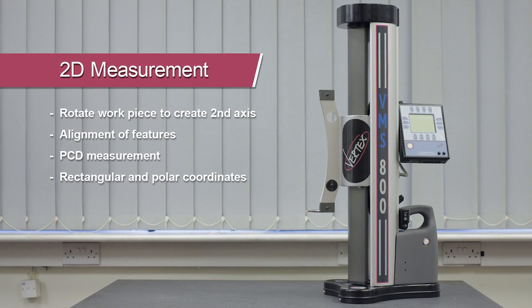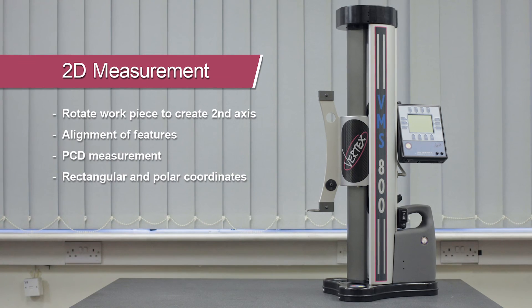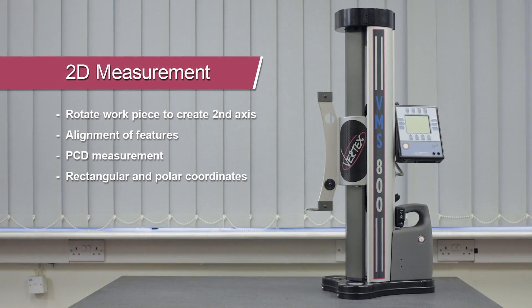Rotating the inspection piece through a known angle allows the vertex to perform advanced 2D measurements, such as feature alignment and PCD inspection.